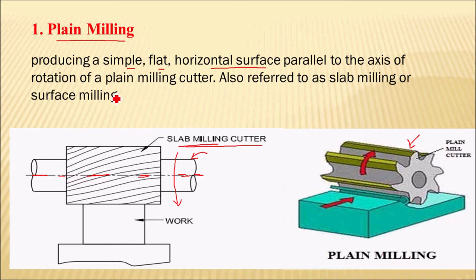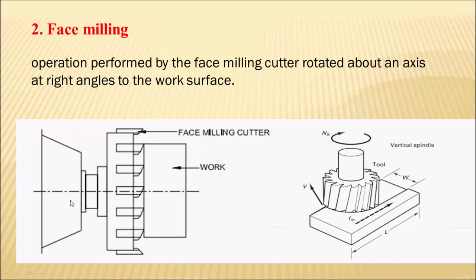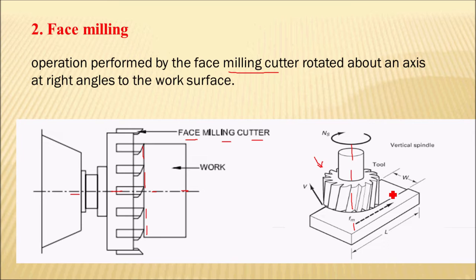The next operation is the face milling operation, which is the reverse of plain milling. In this operation a face milling cutter is used. As you can see, the axis of this face milling cutter is perpendicular to the workpiece surface. The axis of this cutter is at right angles to the workpiece surface.